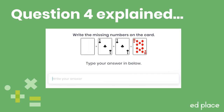Finally, let's have a look at question 4. The missing number is at the beginning of the number sentence. When this is the case, we must do the inverse operation, which will be a subtraction. We put the largest number 10 at the beginning of the number sentence and do 10 take away 1 take away 1, which equals 8. This is telling us the missing number is 8. Let's pop that back into the original addition sentence: 8 add 1 add 1 equals 10. Yes, the missing number is 8.